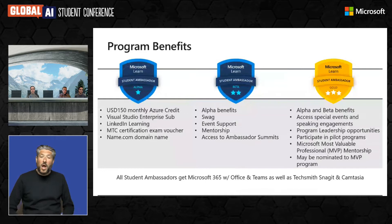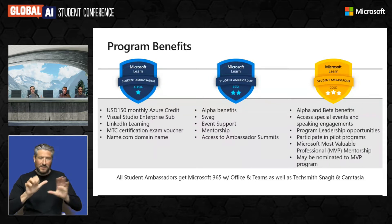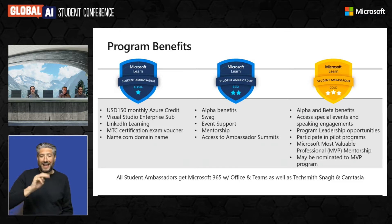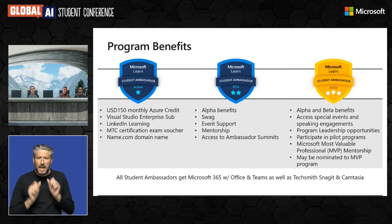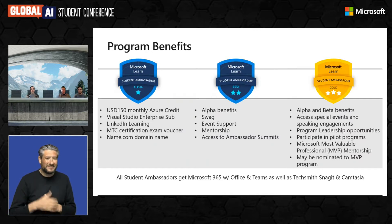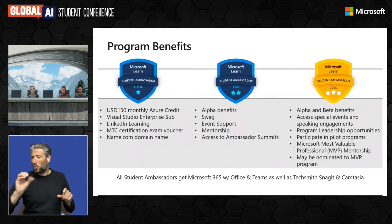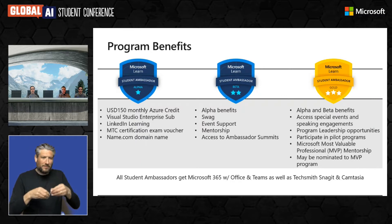The program has amazing benefits. All ambassadors get Microsoft 365 with Office and Teams, as well as TechSmith's Snagit and Camtasia. We have milestones for ambassadors to achieve as they progress. At the Alpha milestone, they get access to $150 of Azure credits a month, Visual Studio Enterprise, LinkedIn Learning, MTC exam vouchers to take exams for free and get certifications, and we partner with name.com for their own domain name so they can build their portfolio online. Once they've hosted their first event, we send out swag kits.